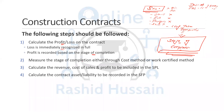The second step is to measure the stage of completion, either through the cost method or the work certified method. There are two methods to measure the progress of the contract.